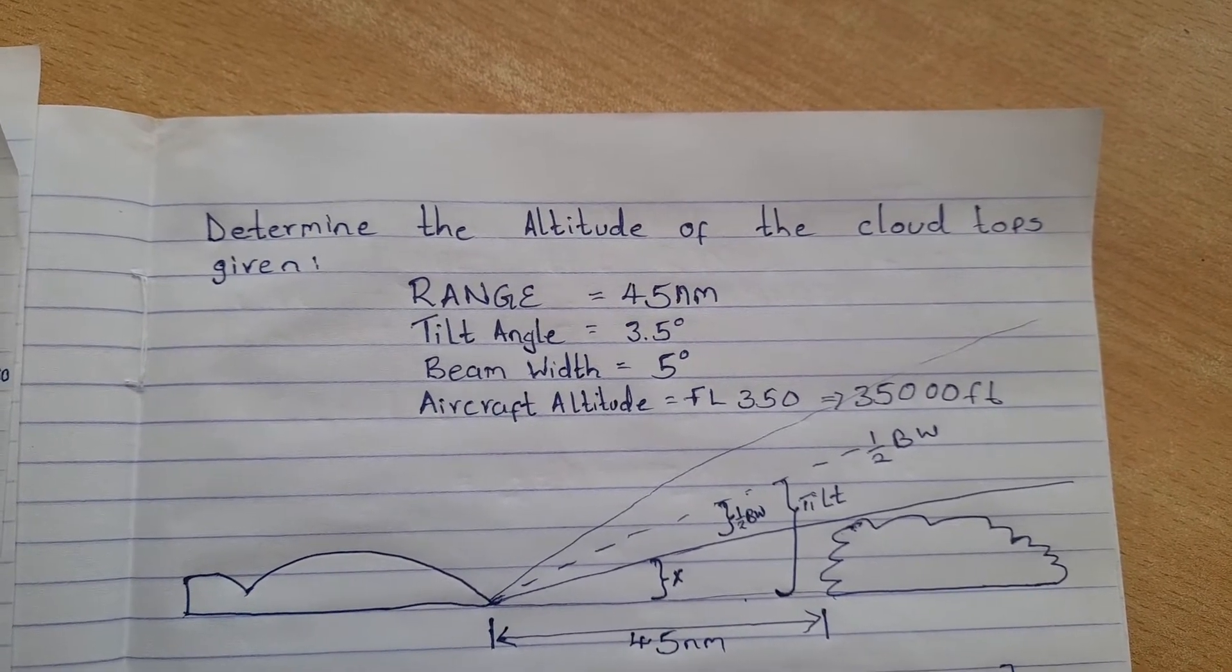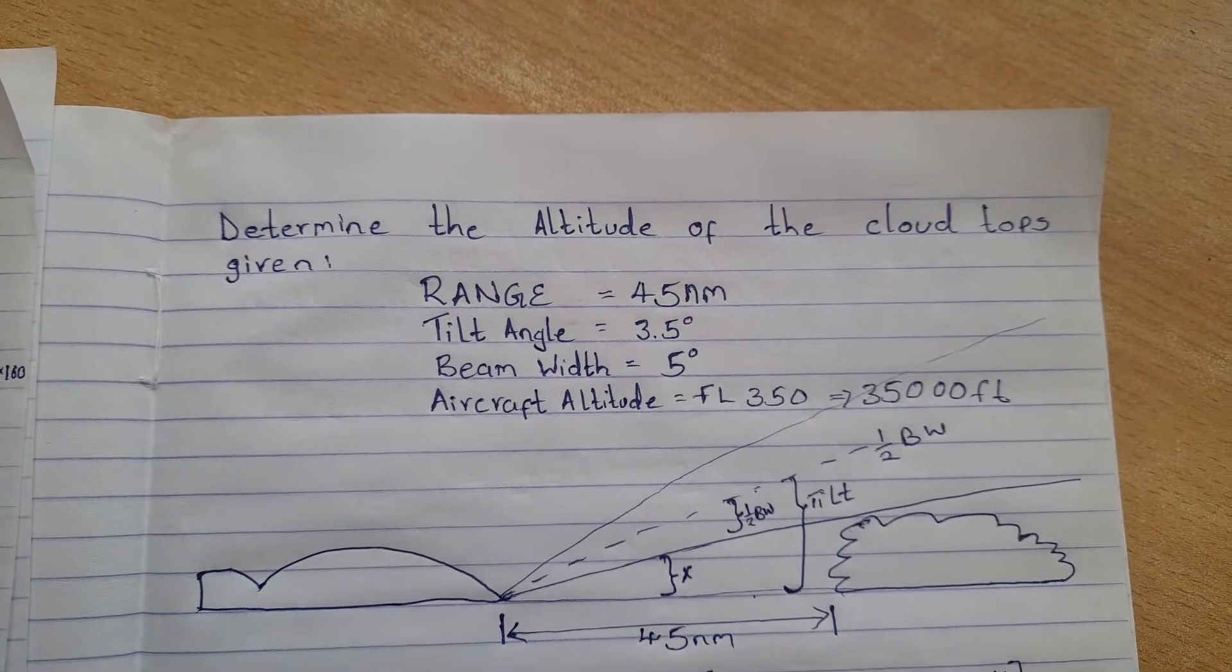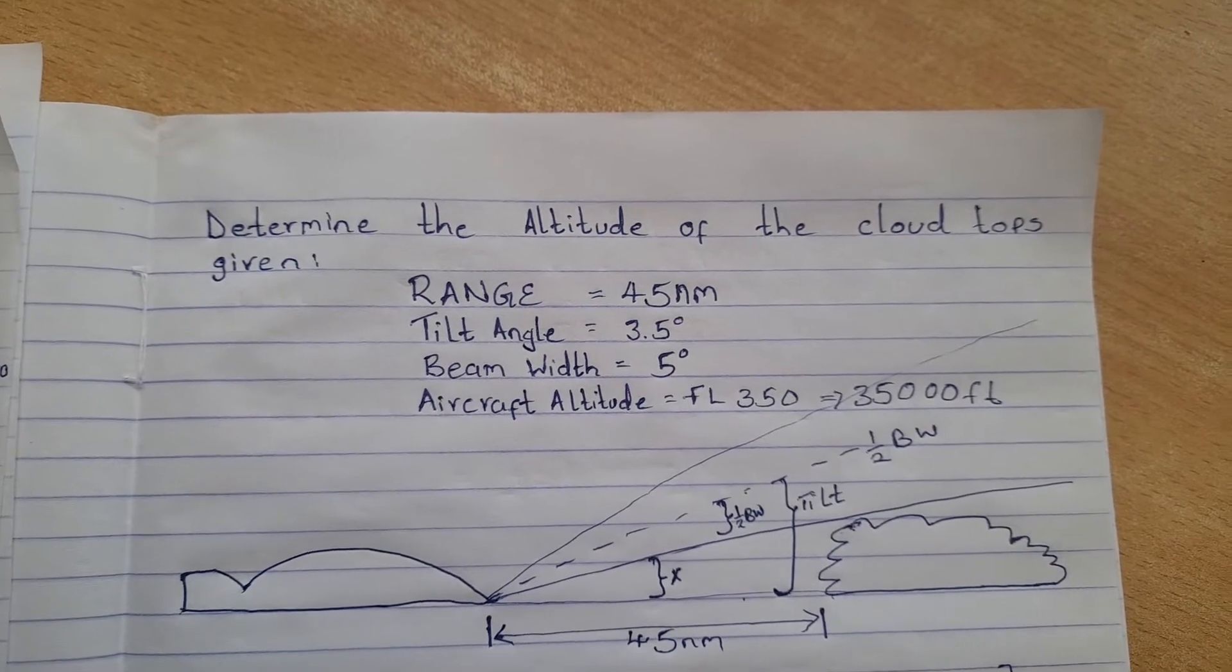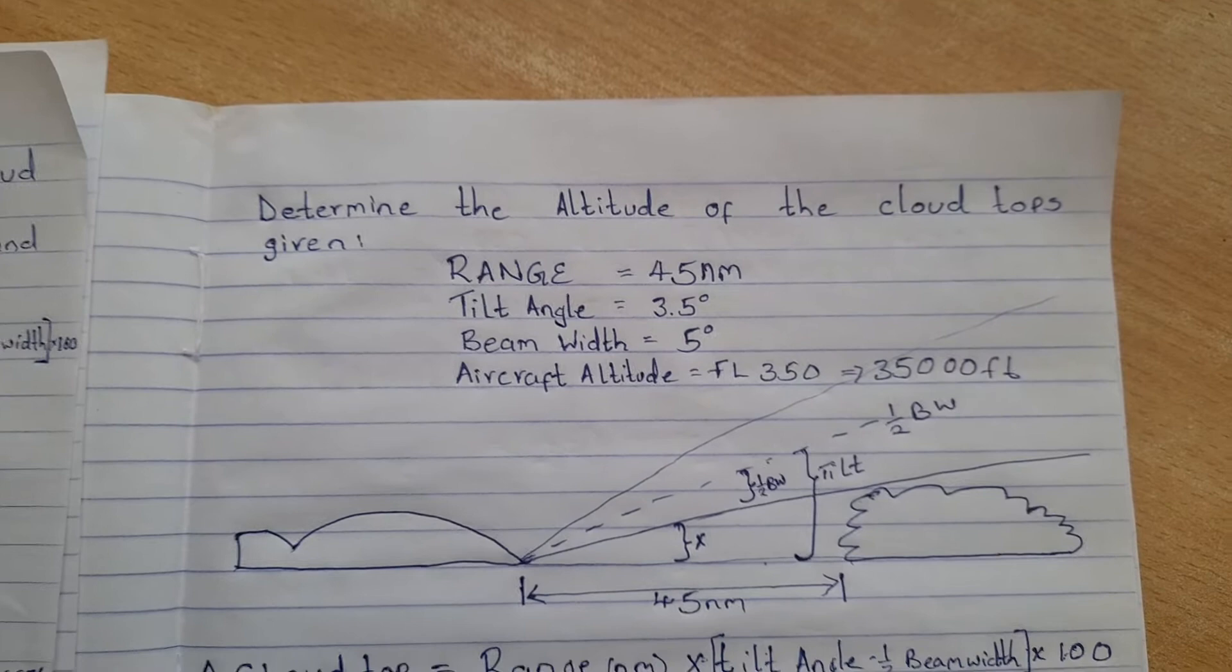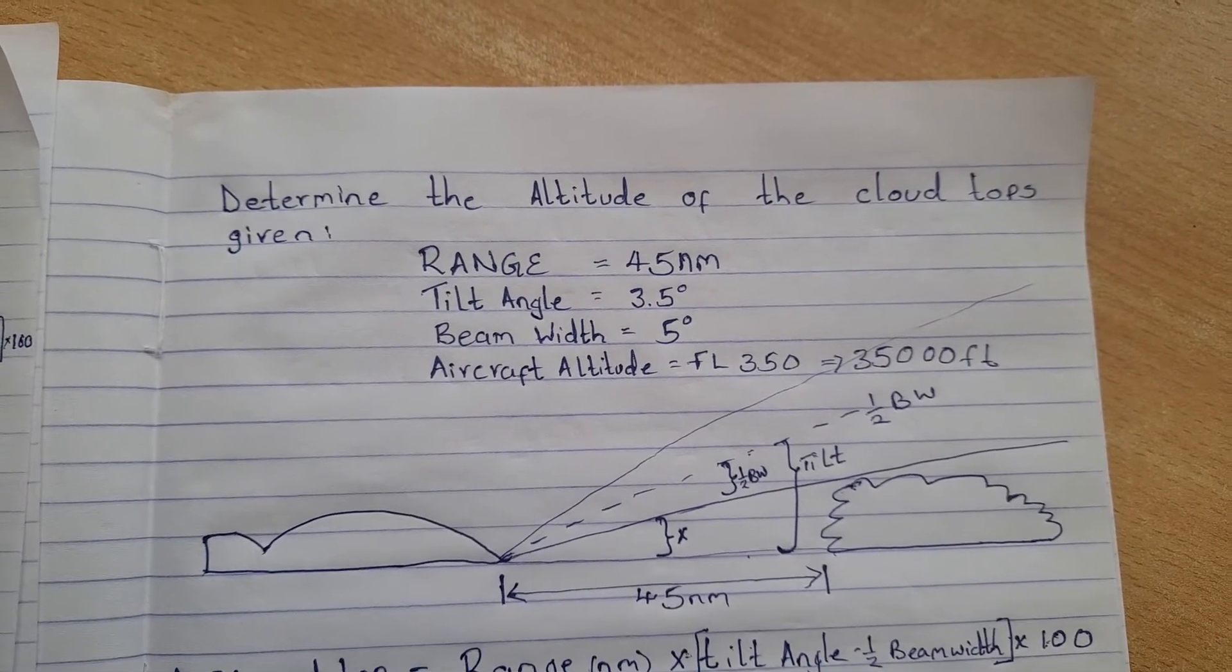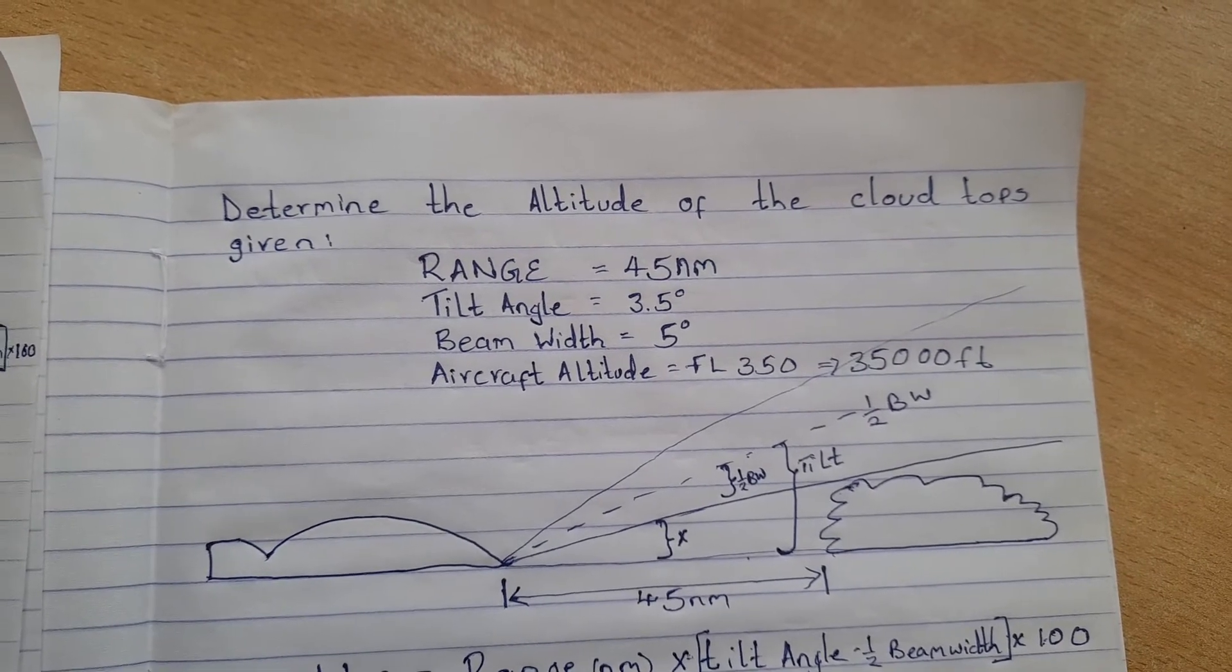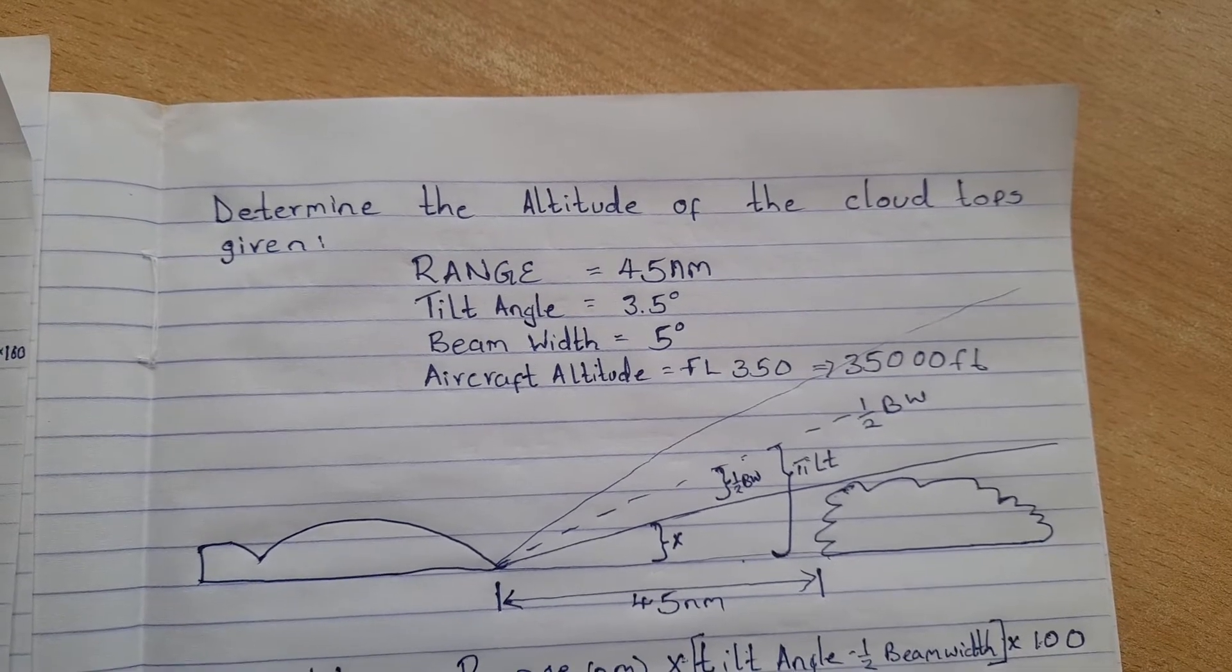The range from the aircraft to the cloud as you can see is 45 nautical miles. The tilt angle, and this we use the weather radar, so we are looking at a question from the weather radar. The tilt angle is given as 3.5 degrees.